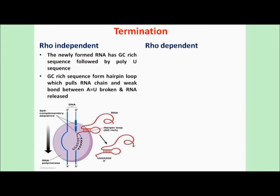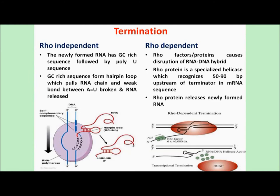In the Rho-dependent pathway, the Rho protein causes disruption of the DNA-RNA hybrid. The Rho protein is a specialized helicase which recognizes a 50 to 90 base pair upstream terminator sequence in the mRNA. Thus, the Rho protein releases the newly formed RNA and removes the newly synthesized RNA from the DNA.